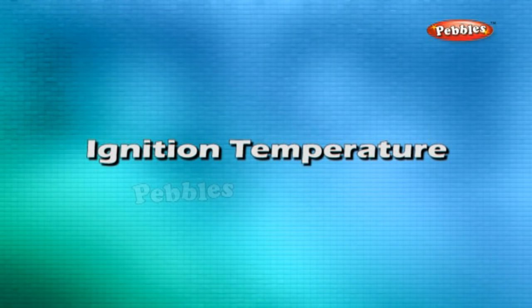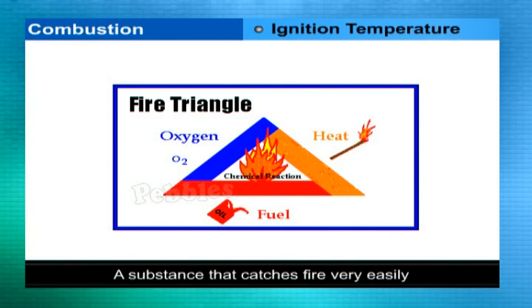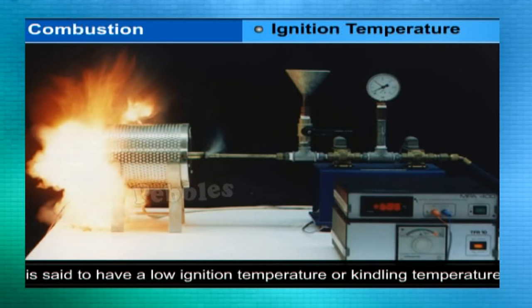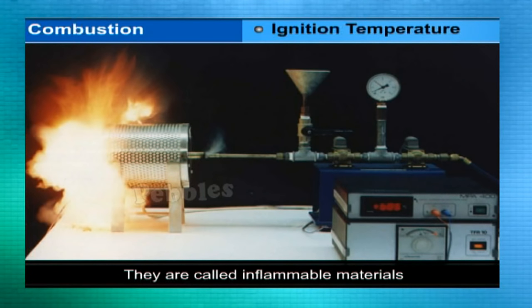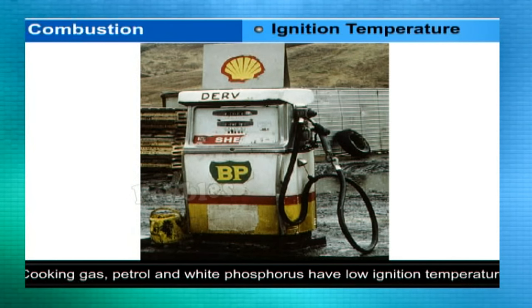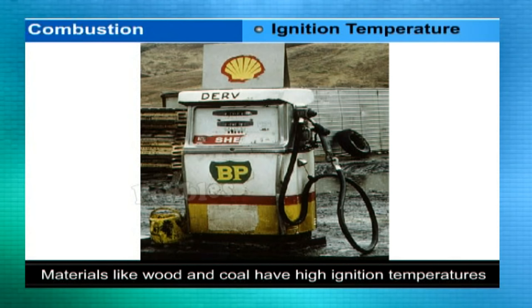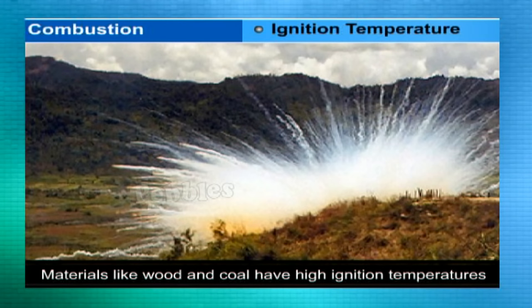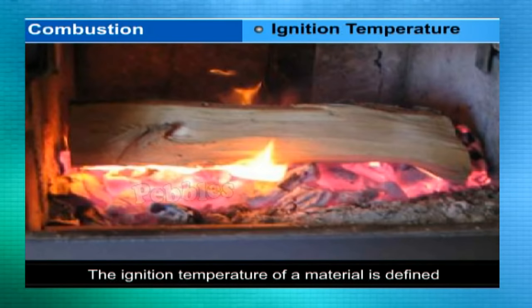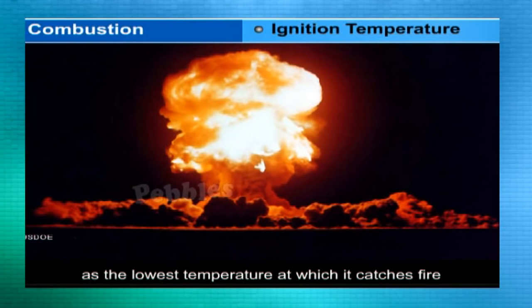Ignition temperature: a substance that catches fire very easily is said to have a low ignition temperature or kindling temperature — these are called inflammable materials. Cooking gas, petrol, and white phosphorus have low ignition temperatures. Materials like wood and coal have high ignition temperatures. The ignition temperature of a material is defined as the lowest temperature at which it catches fire.